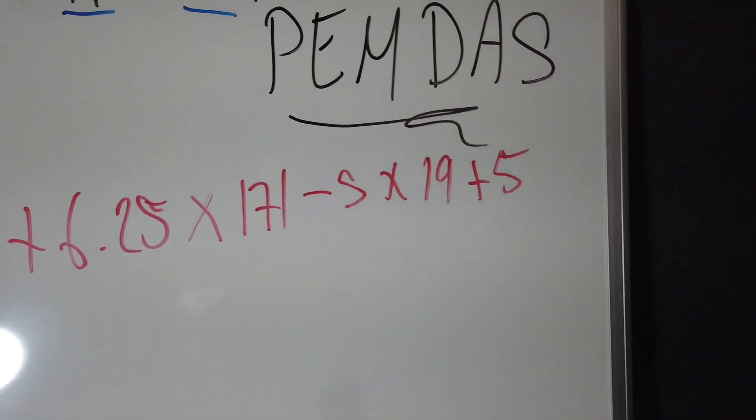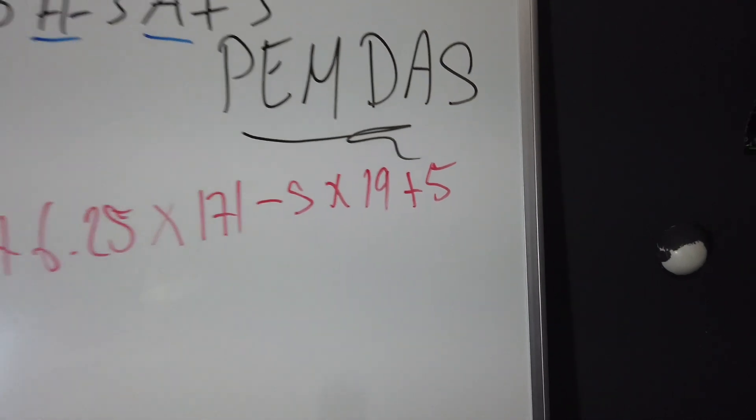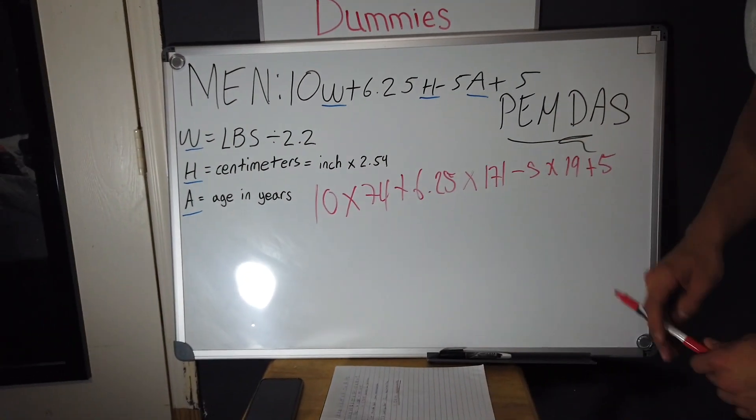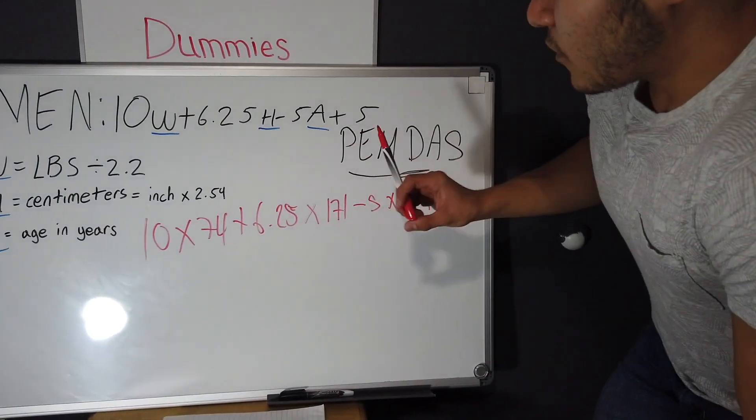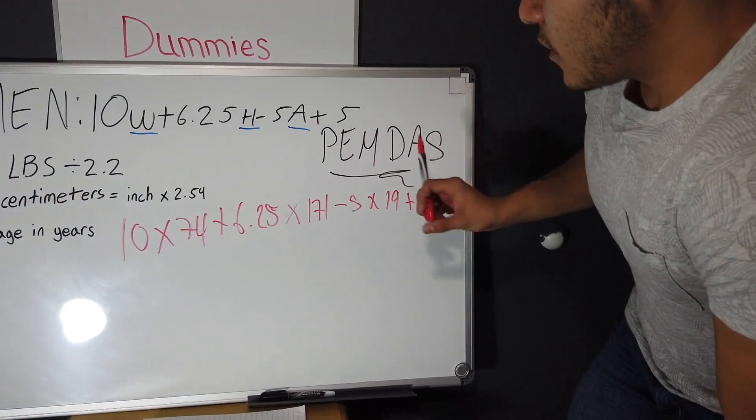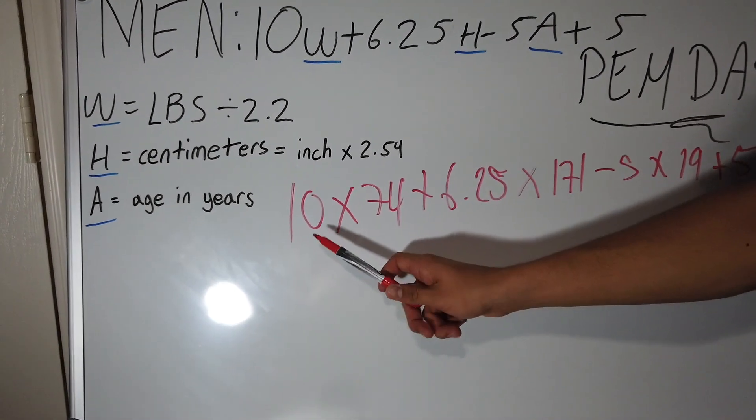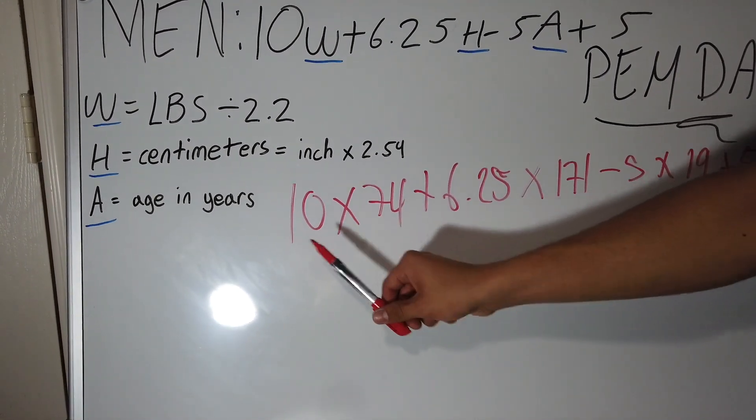Now what you want to do from here is use PEMDAS: parentheses, exponents, multiplication, division, addition, subtraction. So what you want to start off with is first multiplying your 10 times 74.